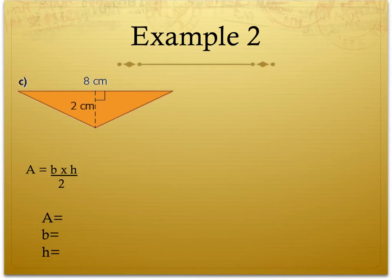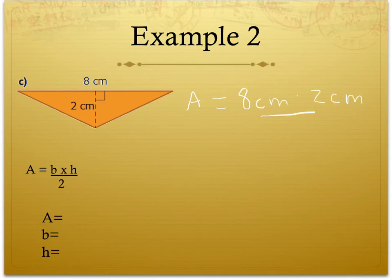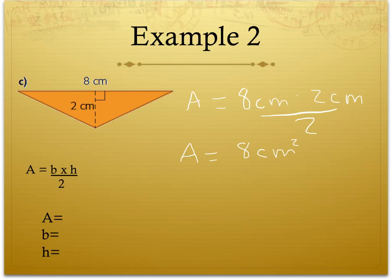Now that you've had some time to work on this equation, we're going to go through it together. So area is equal to our base of 8 cm, times by our height of 2 cm, divided by 2. This gives us an area of 8 cm squared. We have not included any decimal places because our base and our height do not have any, but we have included cm squared.